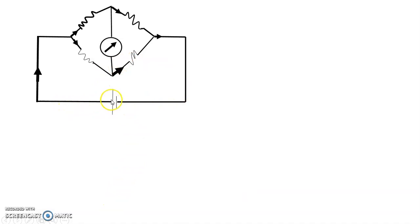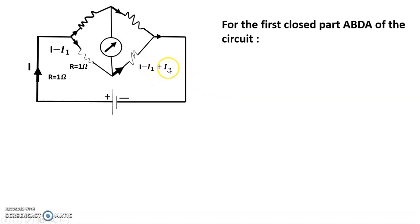This is the galvanometer. I hope this is plus, this is minus. And you see the current flows this way. For the first closed part ABDA of the circuit, let's see. You will see that R = 1Ω. According to the question, R = 1Ω and I minus I1, because I is charged. And this is I. So it is two parts. This is I minus I1. This is I1. This is positive and this is negative. And this is I1 into I1 plus G. You can understand because this is I1, and this is I1 minus G.